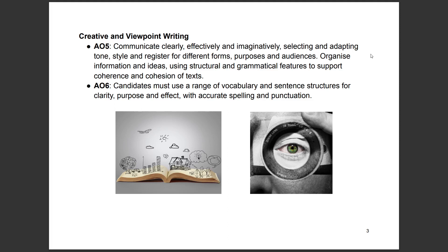Now for the assessment objectives for the creative and viewpoint writing — section B. AO5: communicate clearly, effectively, and imaginatively, selecting and adapting tone, style, and register for different forms, purposes, and audiences. Organize information and ideas using structural and grammatical features to support coherence and cohesion. AO6: use a range of vocabulary and sentence structures for clarity, purpose, and effect, with accurate spelling and punctuation. The same AOs apply to both creative and viewpoint writing.